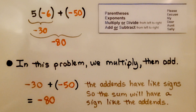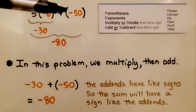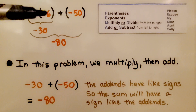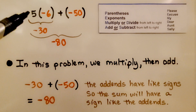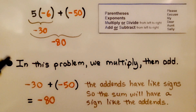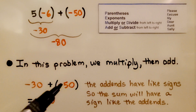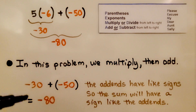Here we have positive 5 multiplied by negative 6, and then we need to add negative 50. We multiply first, then add. We multiply positive 5 times negative 6 and get negative 30. Then we add negative 50, which equals negative 80. The addends have like signs, so the sum will have a sign like the addends.